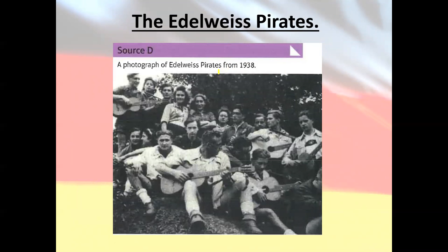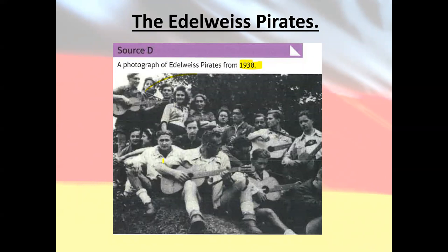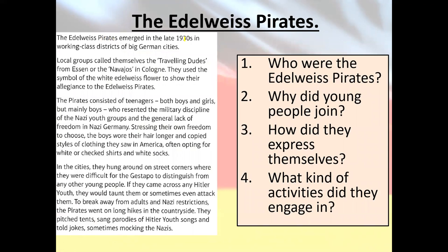Looking at the Edelweiss Pirates first — it's worth remembering that many of these young people were of sixth-form or university age, old enough to travel by themselves. We have a photograph from 1938, a significant year when Hitler's control was growing but not yet complete. The Edelweiss Pirates emerged in the late 1930s from working-class districts of big German cities.